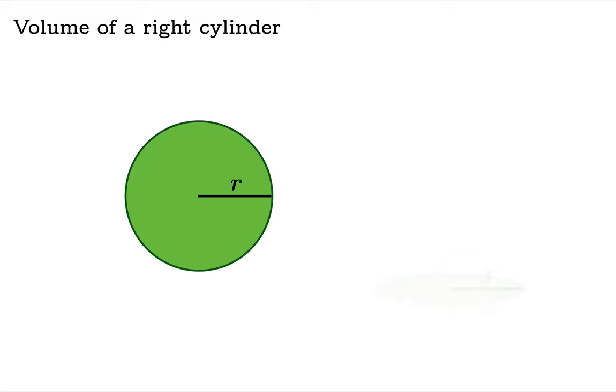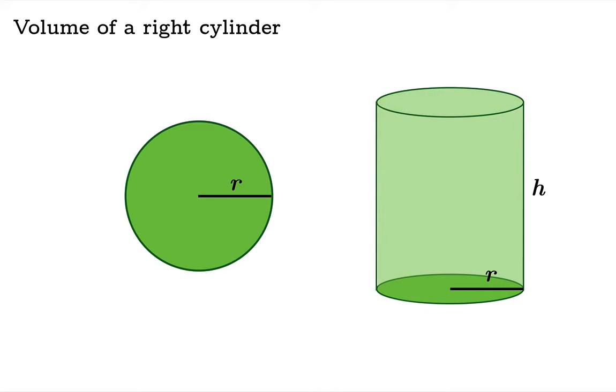If you remember your geometry, you realize this trick works for a cylinder too. If you took a circle with radius r and swept it through a height h, you'd obtain a cylinder. The volume would be the area times the height, and the area is pi r squared. So you get this formula for the volume of a cylinder.